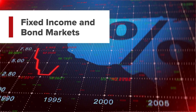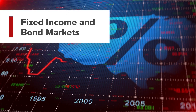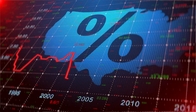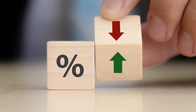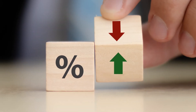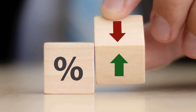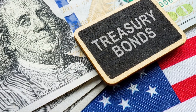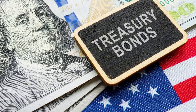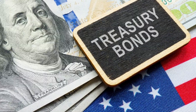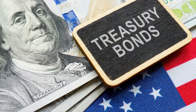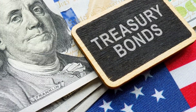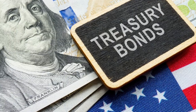Our first lesson in this course focused on how central banks use monetary policy to control the price of money, largely through the control of interest rates. Monetary policy impacts both the economy and multiple asset classes, but its impact is felt most directly in what is known as the fixed income or bond market.